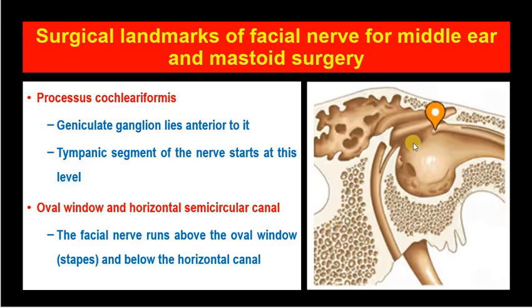The second landmark is the oval window and the horizontal semicircular canal. You can see the oval window in this picture — this is the oval window and this is the round window. The facial nerve lies above the oval window and below the lateral semicircular canal. The dome of the lateral semicircular canal can be seen on the floor of the mastoid, and if you follow it anteriorly you can find the facial nerve, which lies slightly below the lateral semicircular canal.